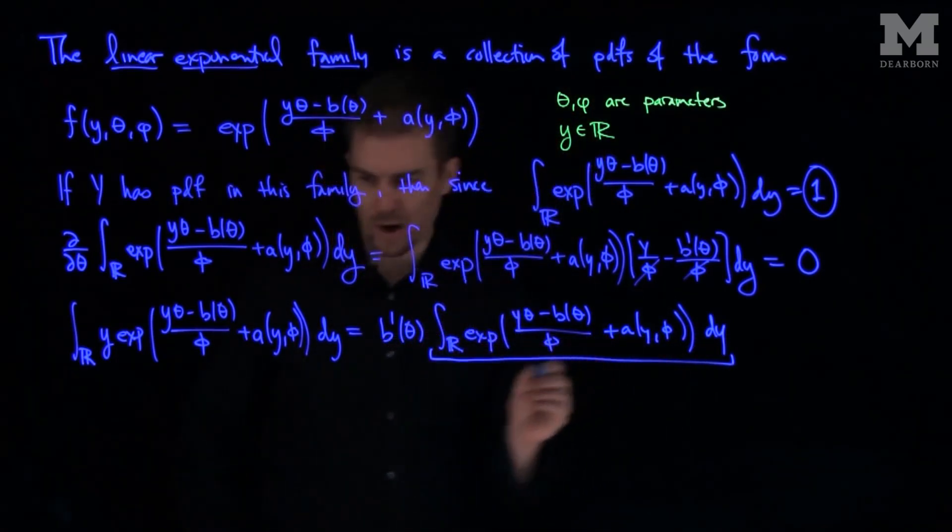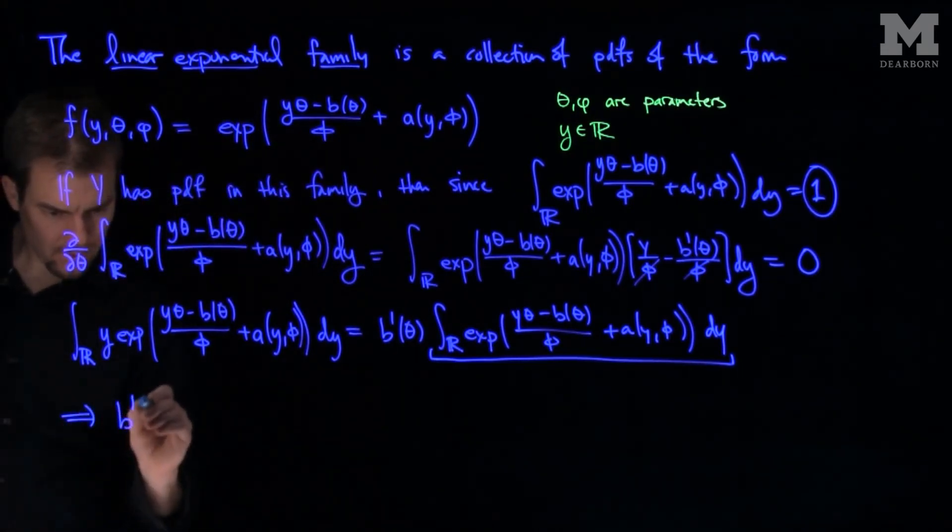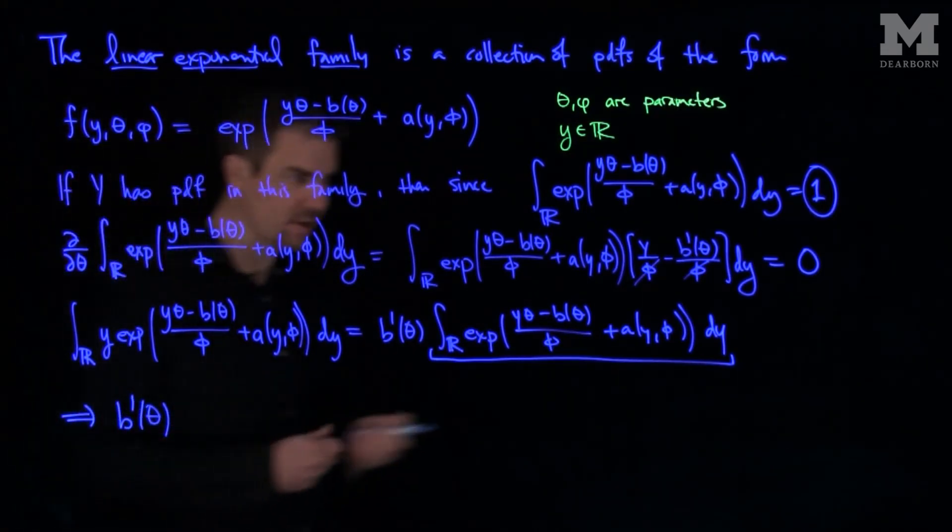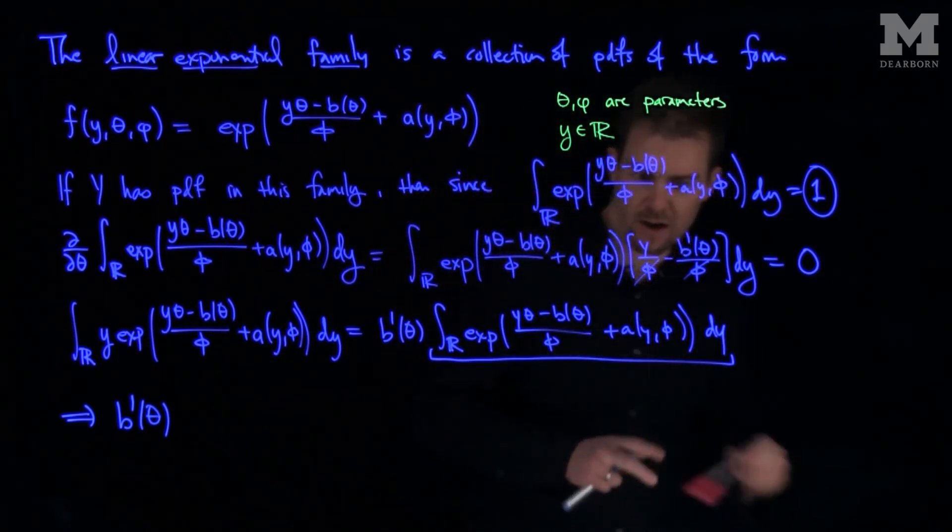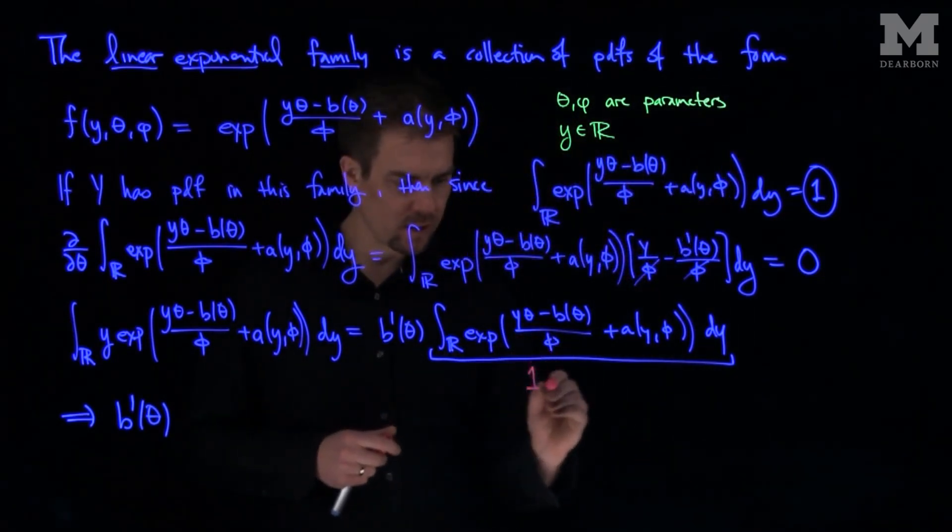Since this integrates to 1, we conclude that b'(θ), which is on the right-hand side—this integrates to 1 again because it's a PDF—this whole thing is 1 by the PDF assumption.